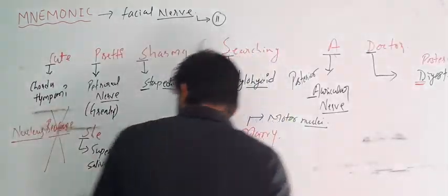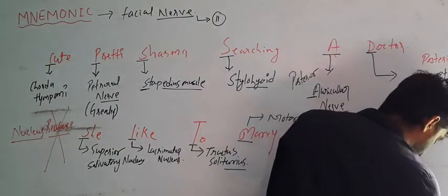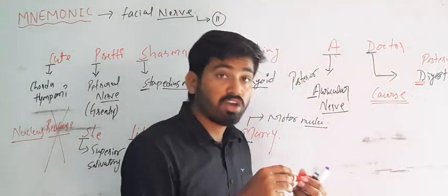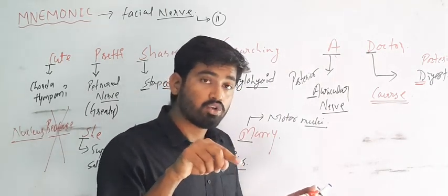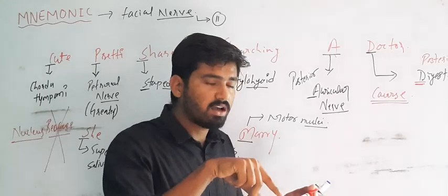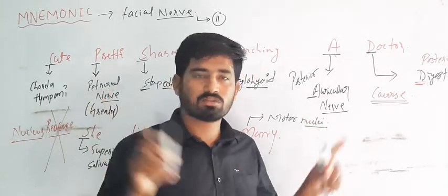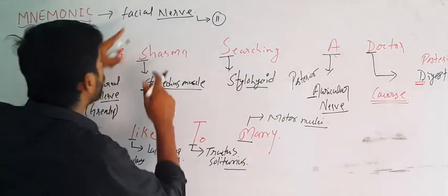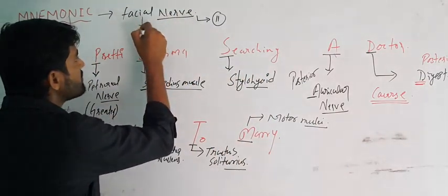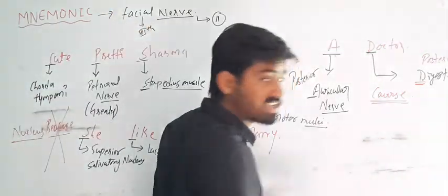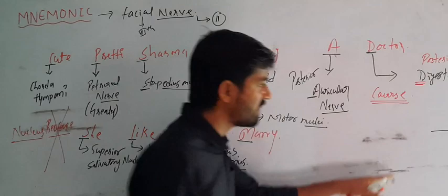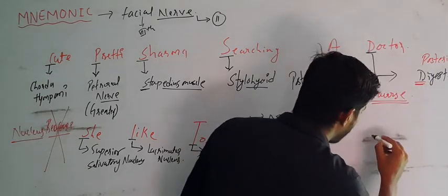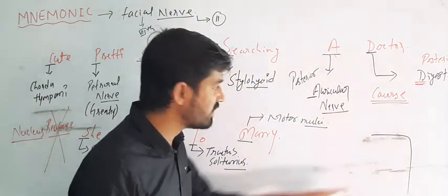Now, course — how to write the course of the facial nerve. If you have seen my video on the middle ear, you will understand very well; I have explained the facial nerve there also. Today is the mnemonic session. The facial nerve is the 7th cranial nerve. How you will write the course — it is like the number 7. I am drawing a diagram. The course is shaped like a 7.